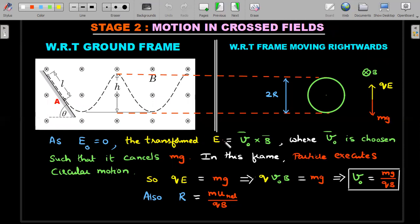Remember, in actual ground frame there is no electric field in the question, but the transformed electric field can be found out as v naught cross B bar. You choose v naught such that you move with that particular speed so that the value of the transformed field force qE in the upward direction cancels the mg.